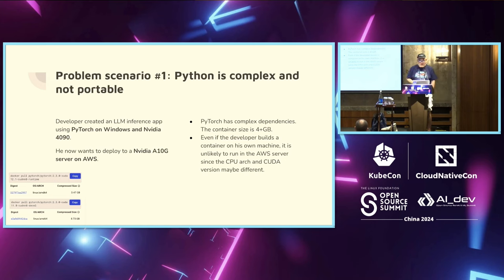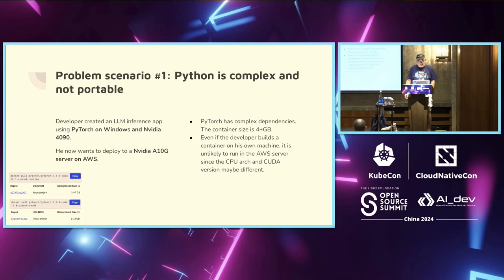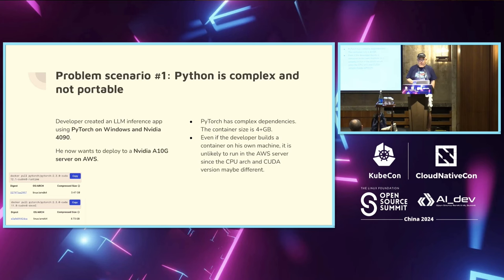If you look at the dependencies that Python or PyTorch has — it's a screenshot from Docker Hub — the standard or minimum image for PyTorch on Linux is about three gigabytes. The more developer-friendly one is eight gigabytes. That's the runtime itself, without the large language model. The large language model adds another five to fifty gigabytes of space. So eight gigabytes plus five gigabytes is thirteen gigabytes — if you embed this whole thing into your application, your application will soon become very bloated.